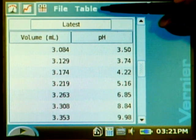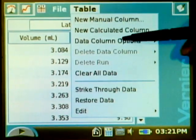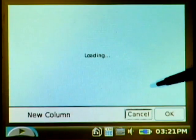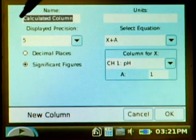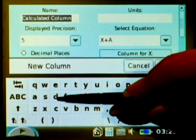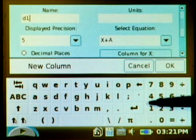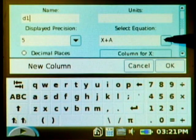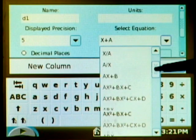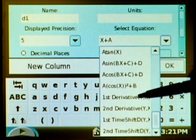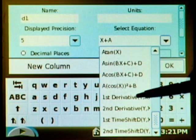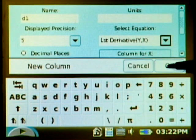One is to create a derivative of our data with a new calculated column. So I'm going to change the name from calculated column just to D1. We're going to do a first derivative here and the equation if I scroll down is already in here as first derivative of Y with respect to X. And say okay.